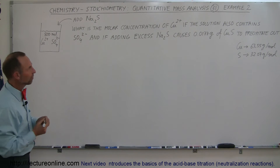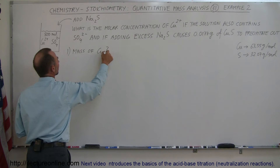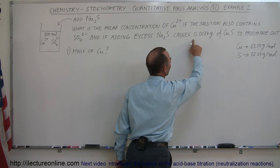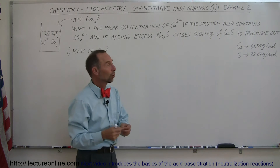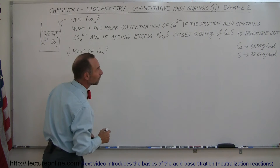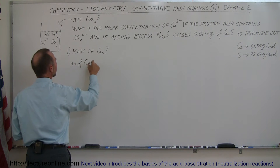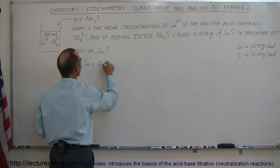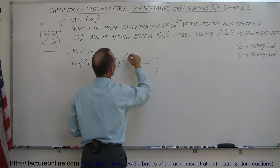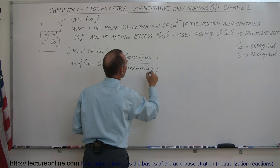Step one: we want to find out the mass of copper in the precipitate. We know the total precipitate mass, so we're going to multiply the total mass of the precipitate times the ratio of how much copper we have in that precipitate compared to the whole mass of that compound, copper sulfide. So the mass of copper is equal to the mass of the sample, which is 0.0177 grams, times the ratio of the mass of copper divided by the mass of copper sulfide.